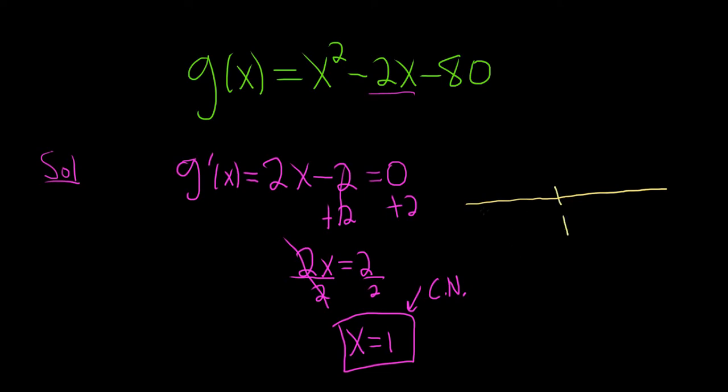And then we pick test points, so you can pick any number you like that's smaller than 1. So how about 0? And you plug it into the derivative. So plugging it in, we'll get 2 times 0 minus 2. So that's negative 2, and because it's negative, the function is decreasing. So I like to put a little arrow here.